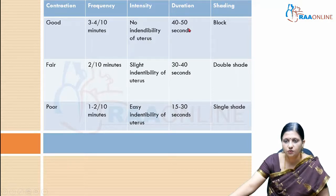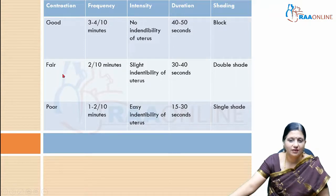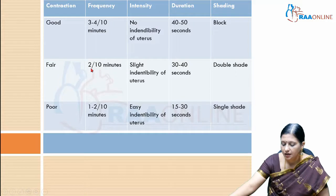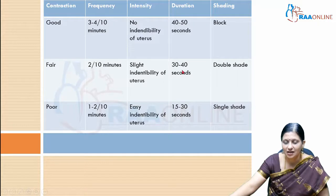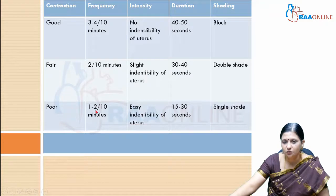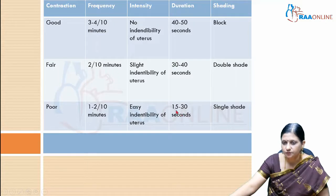A good uterine contraction lasts for 45 seconds and is represented by block shading. Fair uterine contractions are less frequent — occurring about 2 times every 10 minutes — with slight indentability of the uterus at the highest point of contraction, lasting 30 to 40 seconds, and are double shaded on the partogram. Poor uterine contractions occur only once or twice in 10 minutes, the uterus is easily indentable, they last only 15 to 30 seconds, and are single shaded.